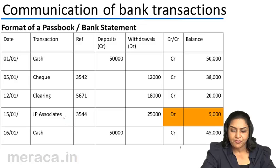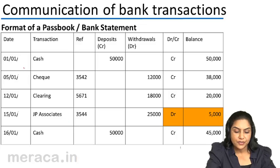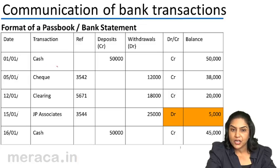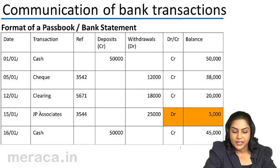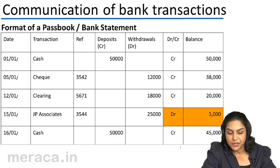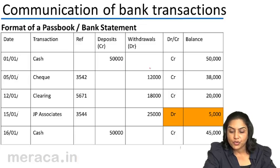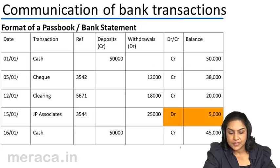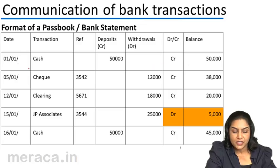A format roughly would be like this, where the date of the transaction, the details, some particulars — whether it was a check or cash, if there is a check, the check number, sometimes the name of the party — the amount deposited, amount withdrawn, and the balance.